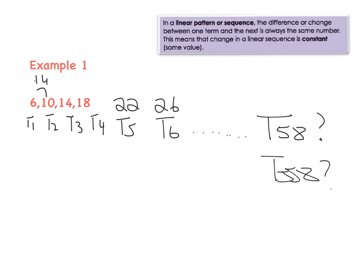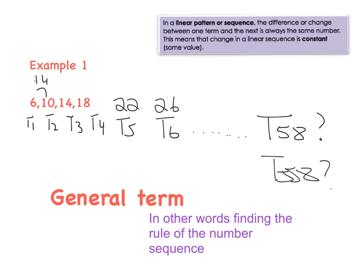Okay, so what we're looking at today is we are looking at finding the general term, and the general term is another word for finding the rule of this number sequence. Okay, so now that we know what we're looking to do, let's learn the method. If I'm looking to find the rule, I am looking to find term n, where n can be any number I want it to be.